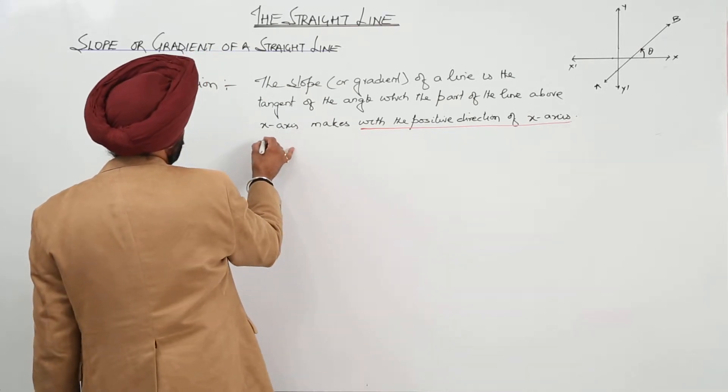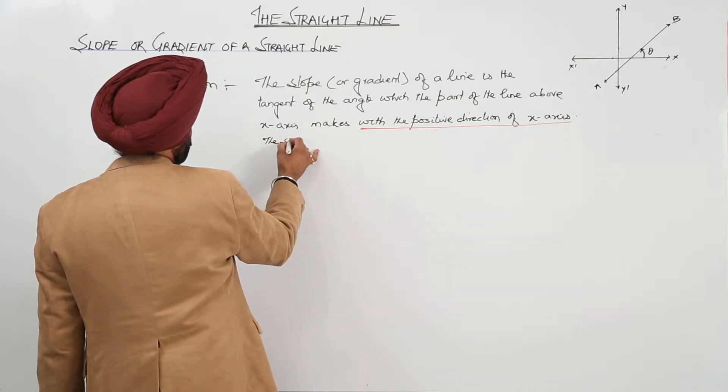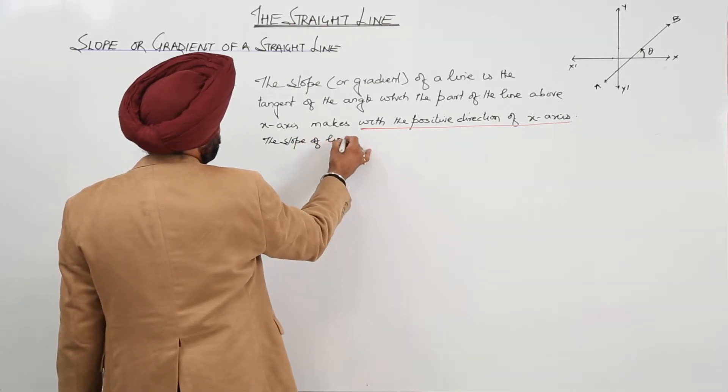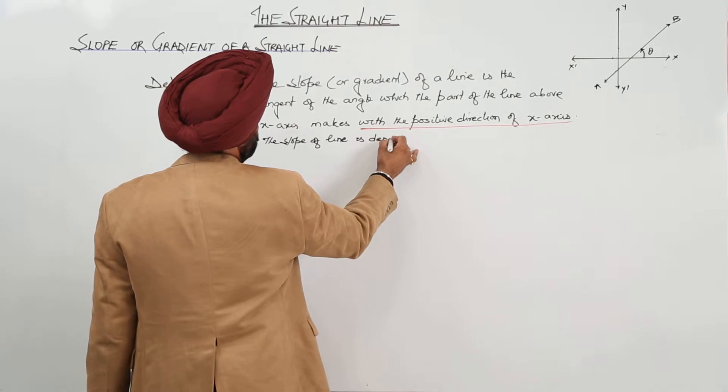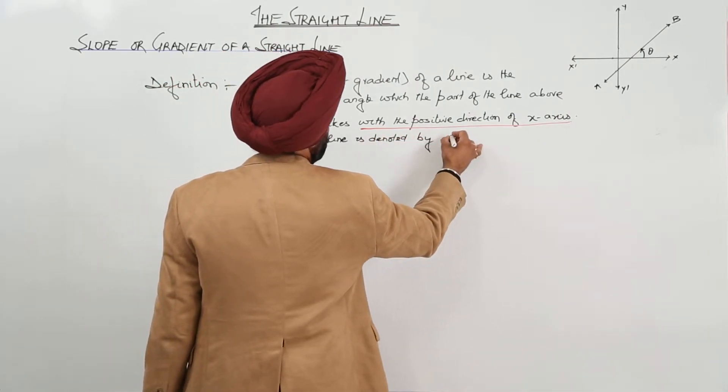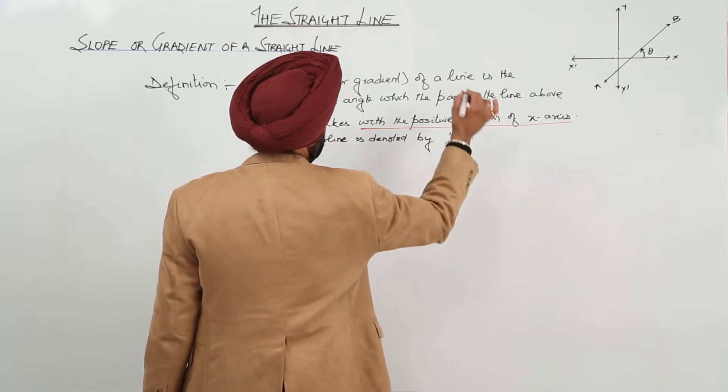The slope of line is denoted by the letter M.